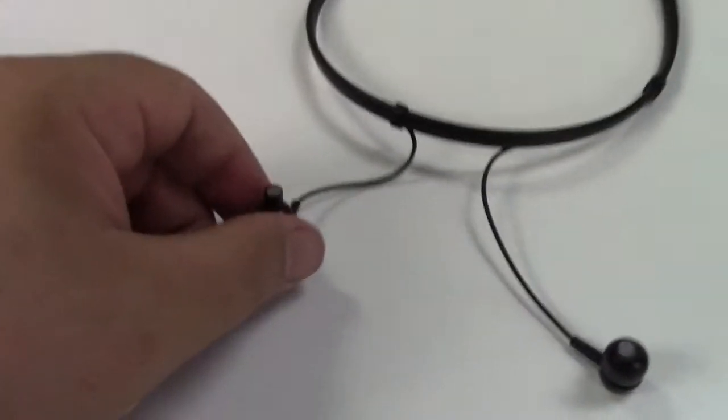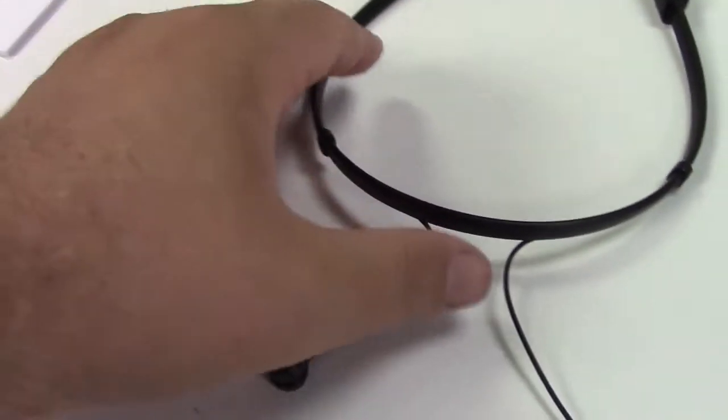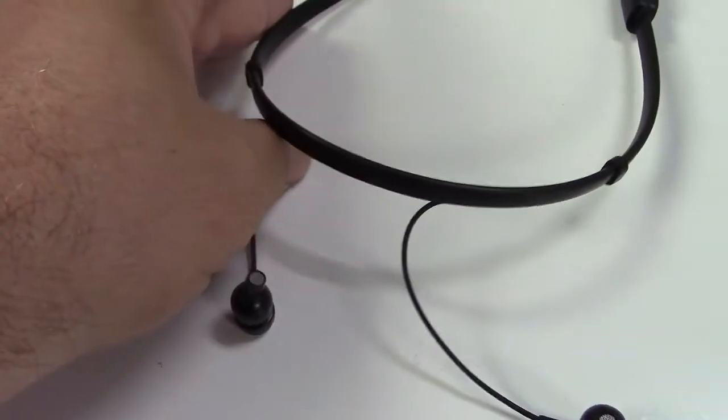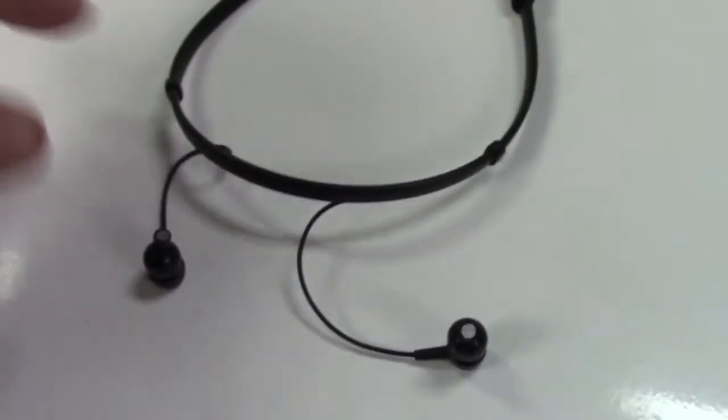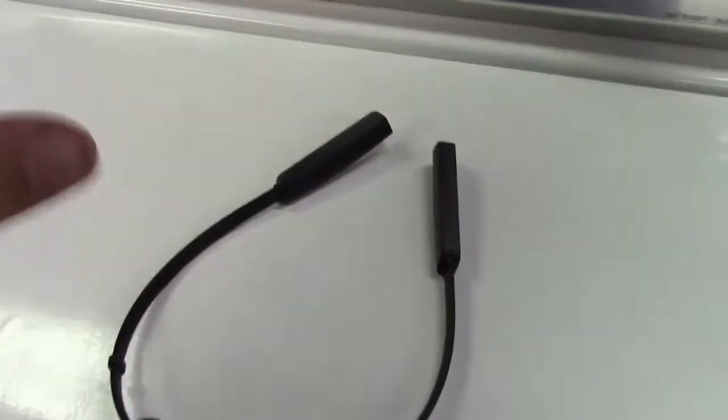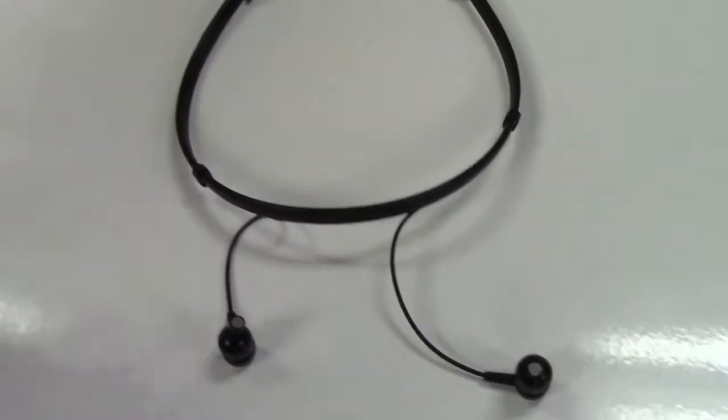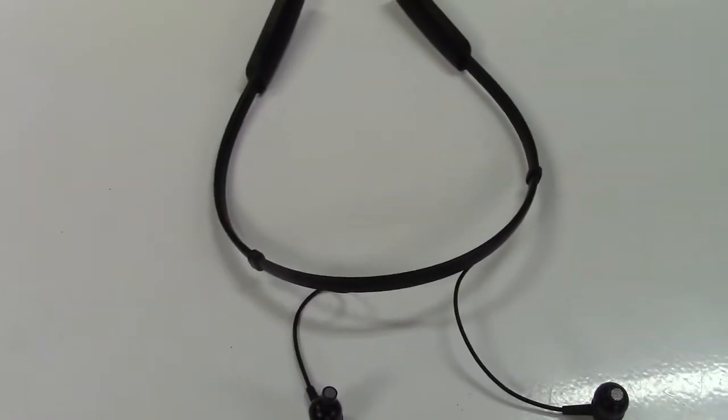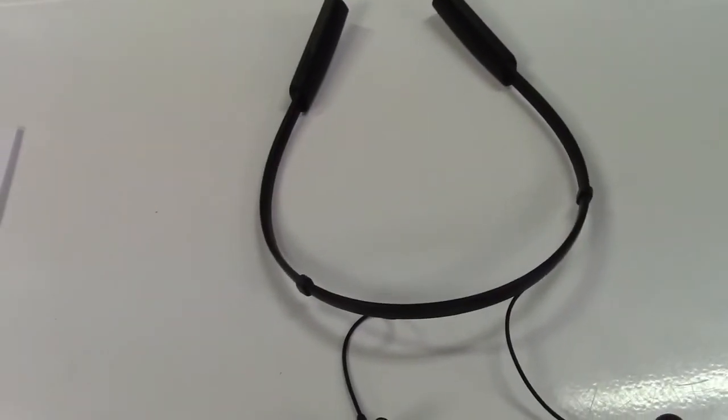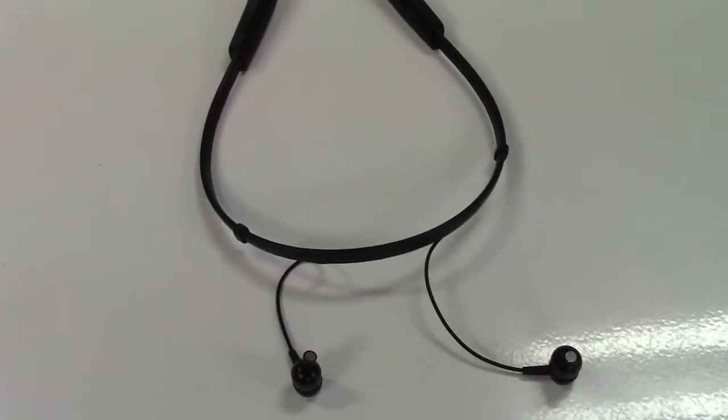So you have two earbuds right here, you can adjust these clips that are on there and spread these out so it will better fit you. You have a couple of controls here and the microphone built into that. And basically what this does is you put it on, you turn it on, and now it acts as a hearing aid.